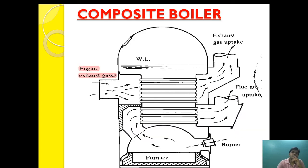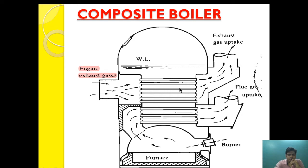First, let's look at the composite boiler. As you can see in this diagram, this is the composite Cochrane-type boiler. The composite boiler generally consists of two parts: one is the oil-fired smoke tube boiler and one is the exhaust gas smoke tube boiler, combined into one boiler. When the engine is running, exhaust gas enters the smoke tube, and the surrounding water gets heated up to produce steam for auxiliary purposes.